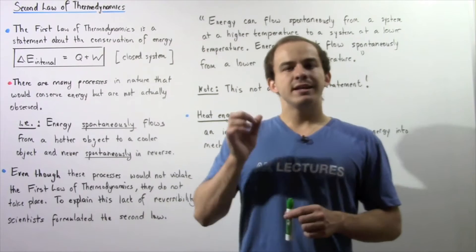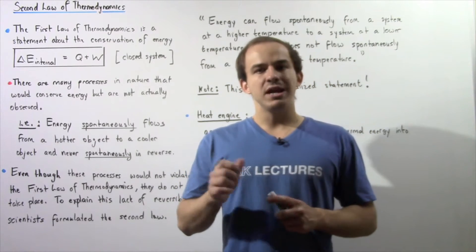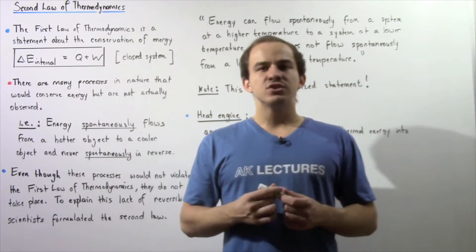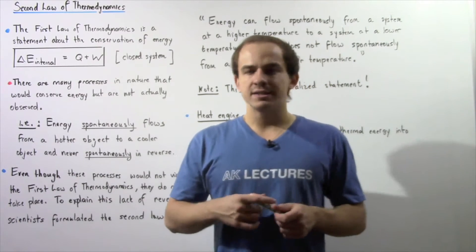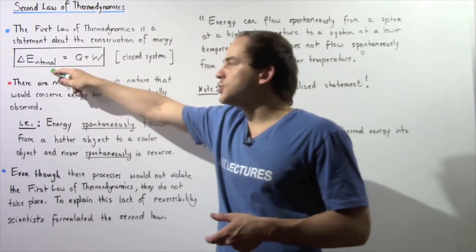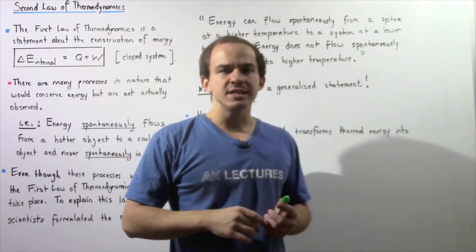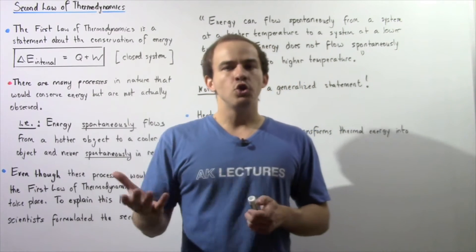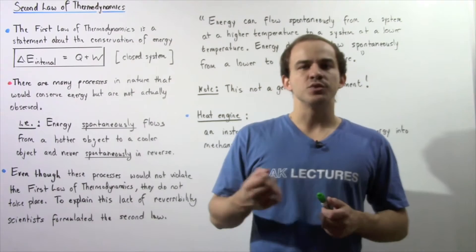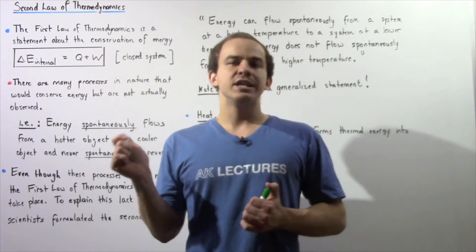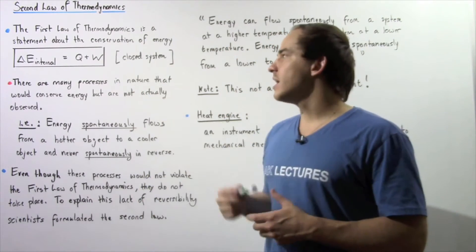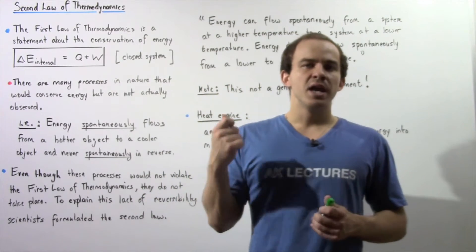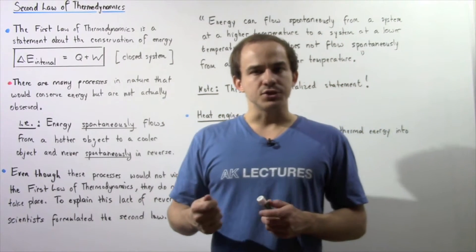It states that in any closed system in which energy is allowed to flow in or out of the system, the change in internal energy of our closed system is equal to Q plus W, where Q is the energy transferred as a result of heat that is transferred into our system and W is the work that is done on our system by the surroundings.